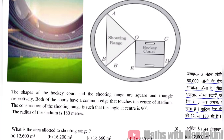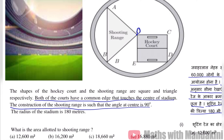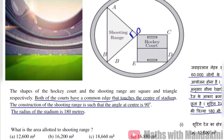Toh ab jo hume shooting range aur hockey court diya hua hai, unke baare mein kya bataya hai ki un donoh ka ek common edge hai jo center ko touch kerta hai. Yani yeh hai humara center O, kendra O. The construction of the shooting range is such that the angle at the center is 90 degrees. Shooting range jo hai woh kendra pe 90 degree ka angle bana rahi hai. Radius of the stadium is 180 meters.